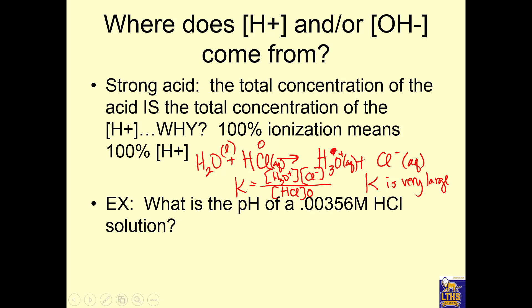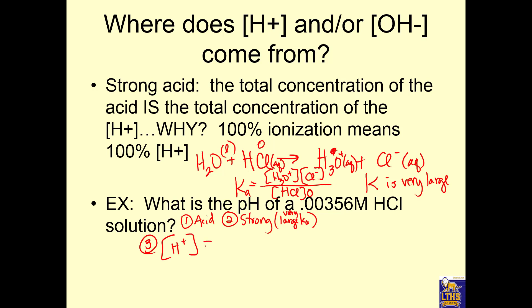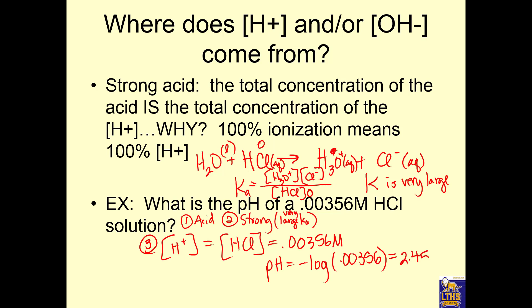If you look up strong acids on the Ka table, you'll see it says very large. So if we want to know the pH of a strong acid: we write the equation, we know it's a strong acid with a very large Ka, and so H⁺ equals the concentration of the acid — 0.00356 molar. Then pH equals the negative log of 0.00356, and we find the pH of the solution is 2.45.